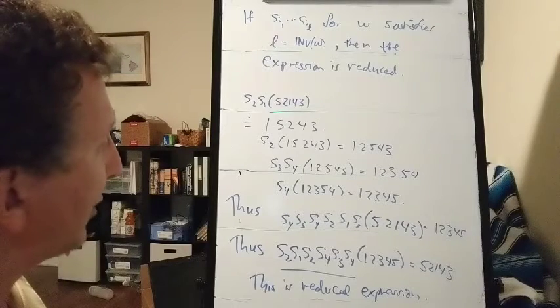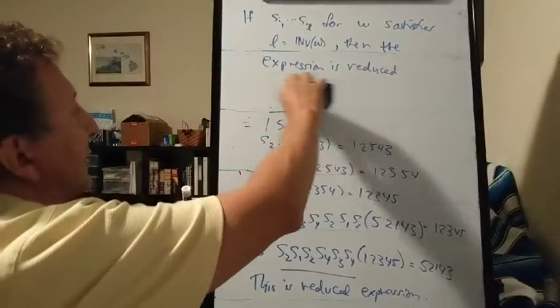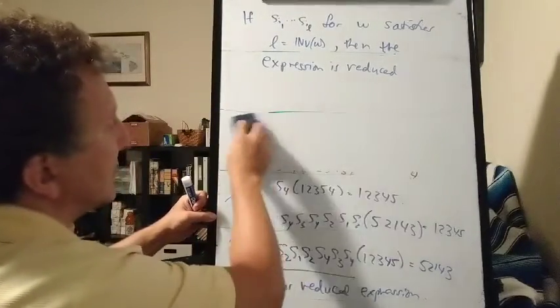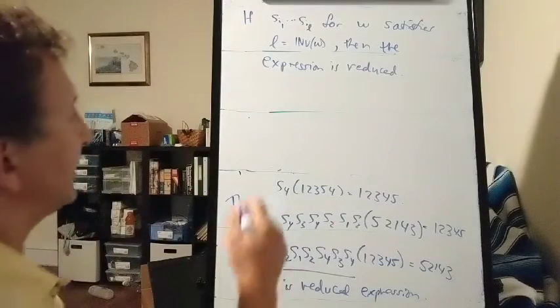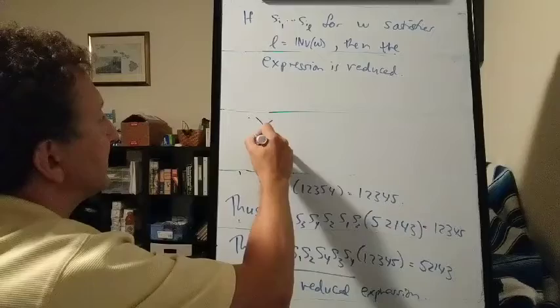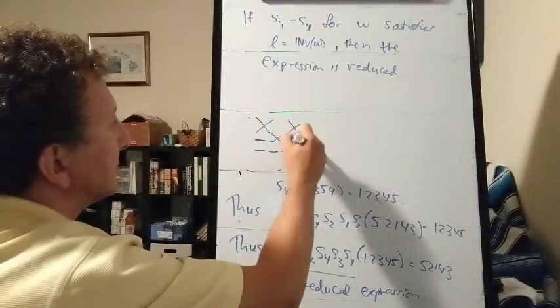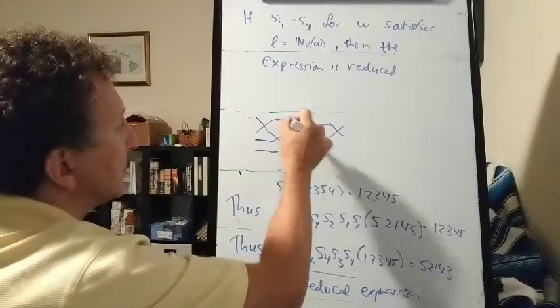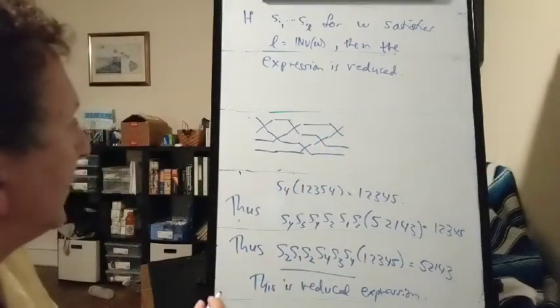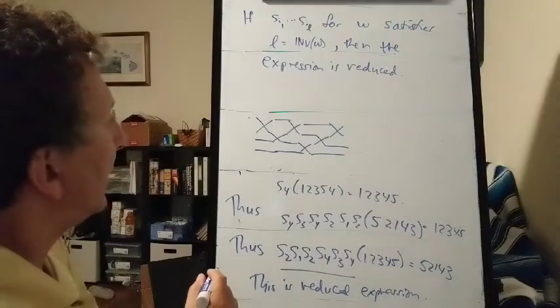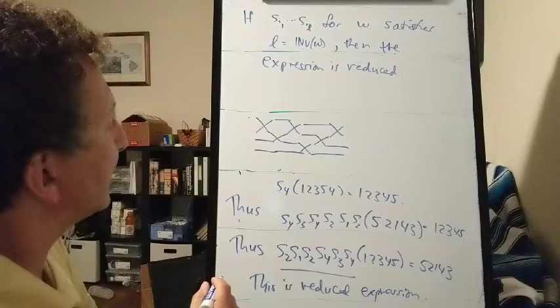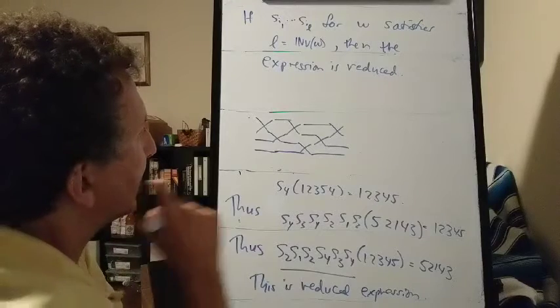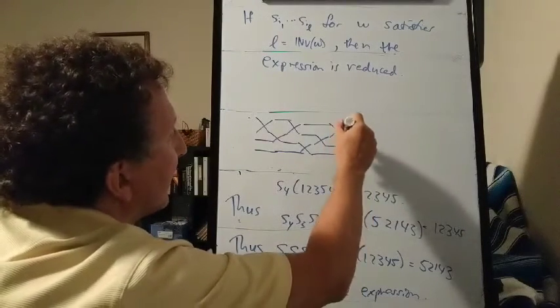Now another fact about reduced expressions that's kind of neat is you can see from a wiring diagram whether an expression is reduced or not. So let me draw a wiring diagram here. Alright, this I believe is reduced, but if I put some more x's in here, I think I can make it not reduced. Here, one more x. This is not reduced.